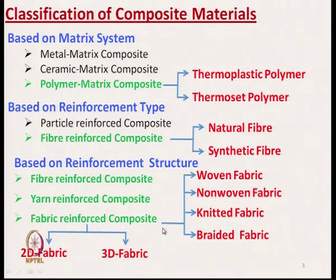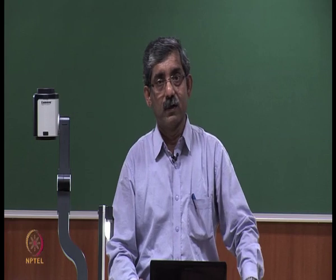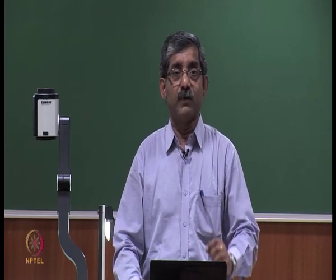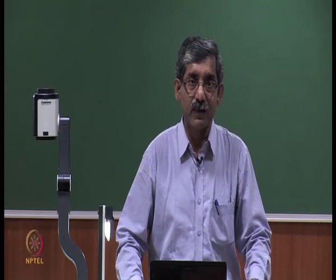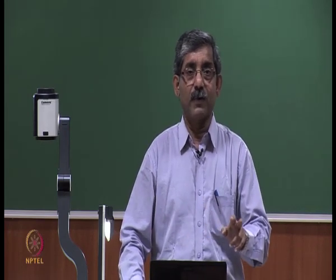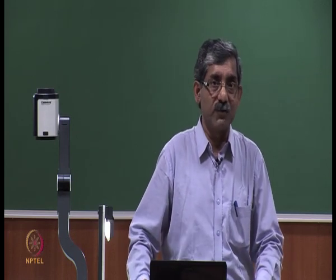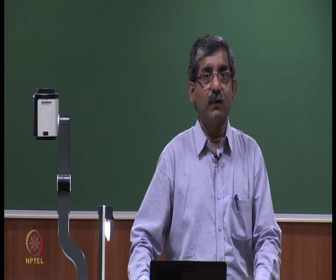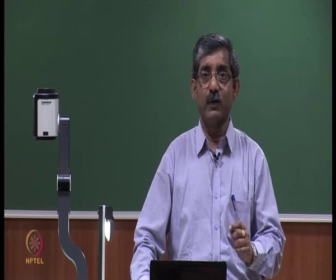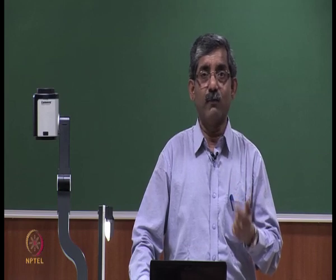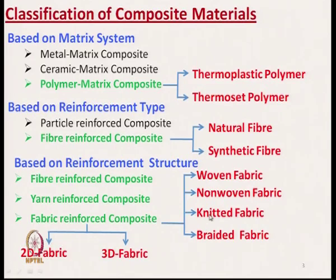Fabric reinforced composite can be divided into two categories: one based on dimension — that is two-dimensional fabric or three-dimensional fabric — and the other based on type of fabric. Based on type, the first is woven fabric reinforced composite, then non-woven fabric reinforced composite, third is knitted fabric reinforced composite, and fourth is braided fabric reinforced composite.